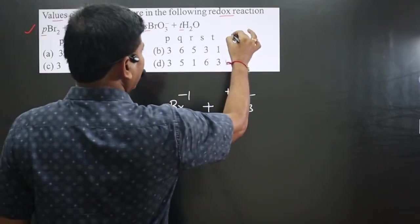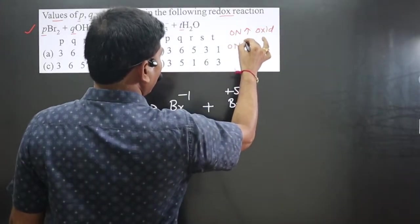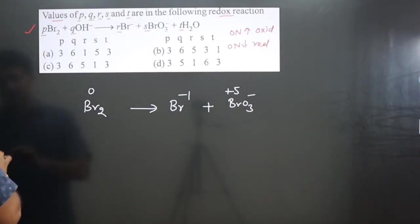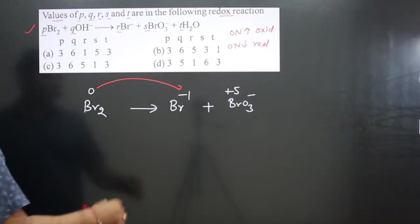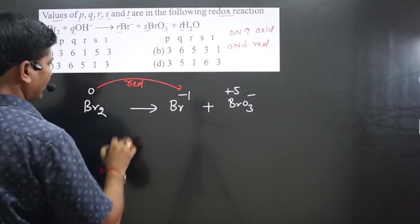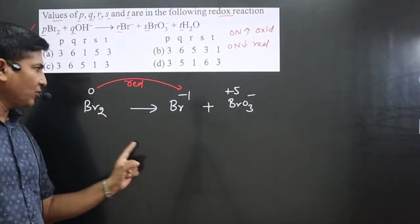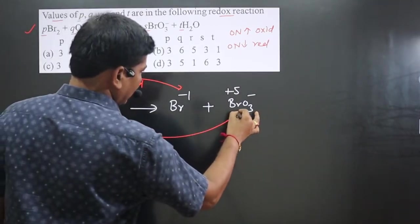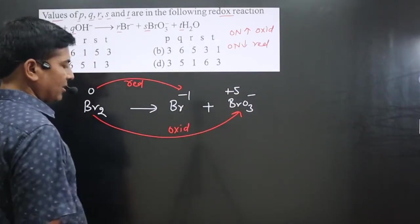Always keep in mind: an increase in oxidation number is an oxidation reaction, and a decrease in oxidation number is always a reduction reaction. Comparing oxidation numbers: Br₂ goes from 0 to −1 in Br⁻ — that's a decrease, so that is reduction. Then Br₂ goes from 0 to +5 in BrO₃⁻ — that's an increase, so that is oxidation.